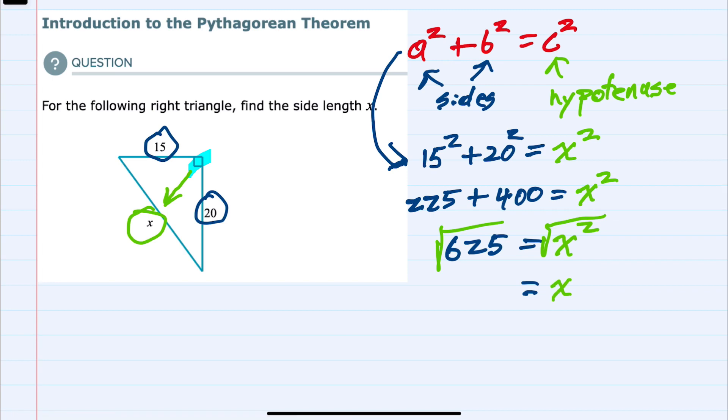On the left-hand side, we have the square root of 625, which is 25. So we were asked to find the x value, which here is 25.